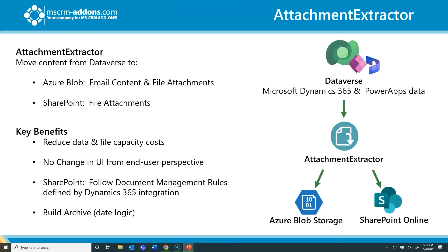There's no change in the interface at all. Hosting the Attachment Extractor services is included in the subscription cost, however they can also be self-hosted via an Azure VM or local server. For attachments you can either move to SharePoint or Azure Blob, whereas for email content you can only move to Azure Blob storage. Attachment Extractor is fully configurable with several filter options such as date range, file size, and entity type, so that only what you define is extracted by the services.